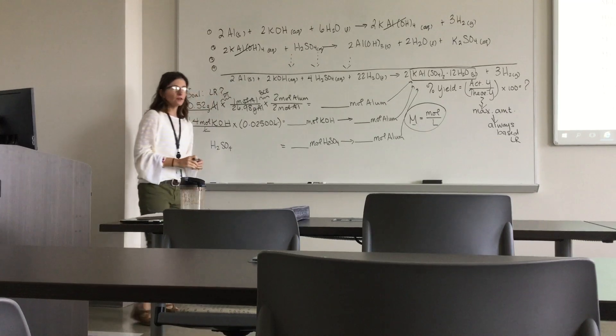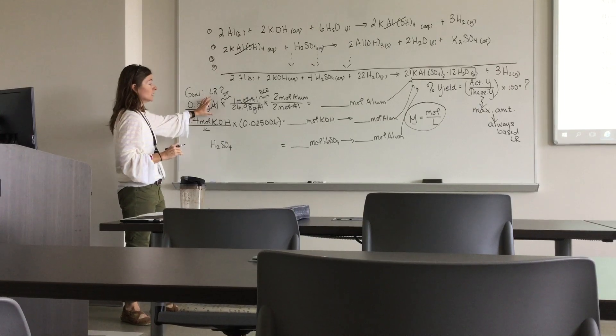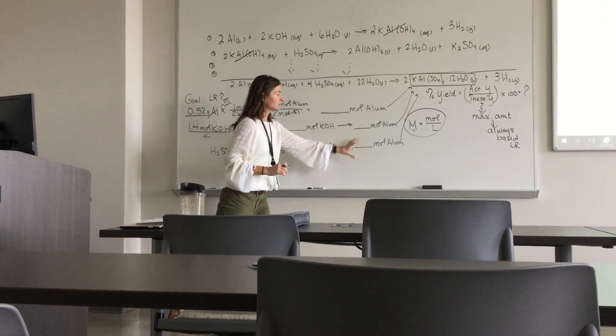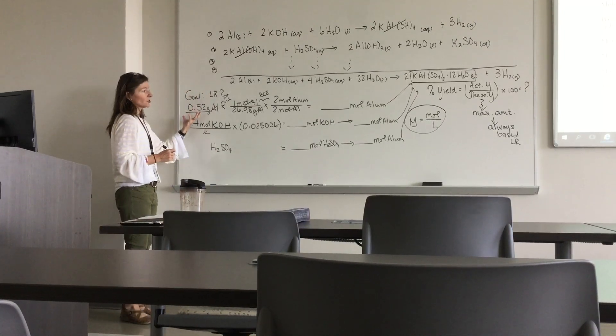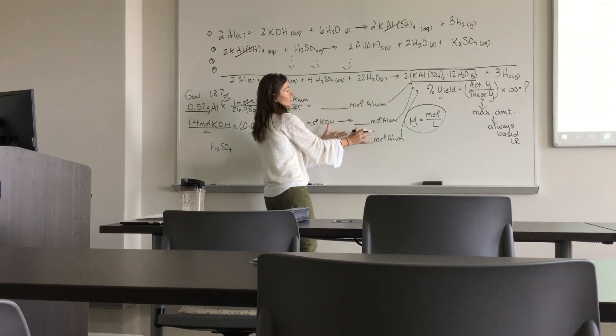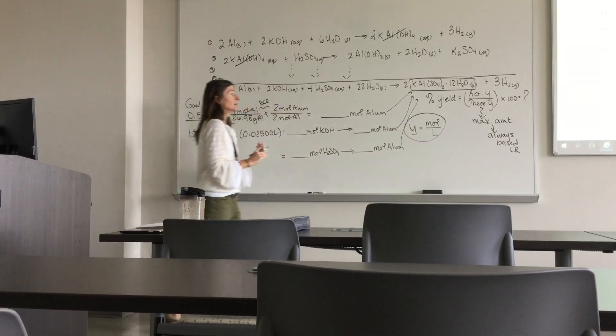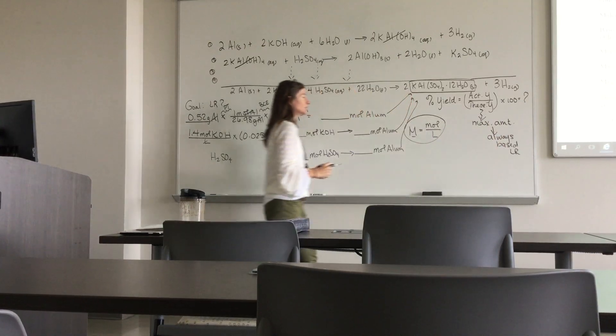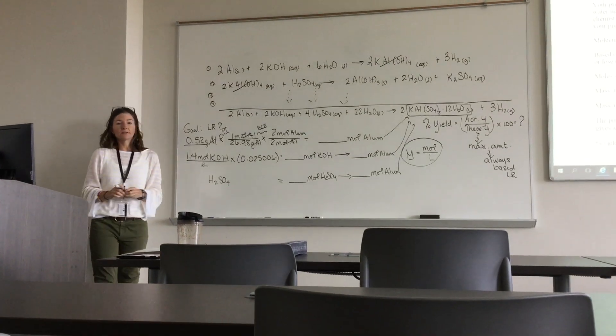Once you get to that point and you have your values, now you can figure out which one's the limiting reactant. Which one of the three—aluminum, potassium hydroxide, or sulfuric acid—produces the least amount of alum? Whichever one that is, that is your limiting reactant, and you will circle your limiting reactant. Also, whichever one produces the least amount, that one tells you what the moles of theoretical alum are produced. So whichever one produces the least amount is the limiting reactant, and it also tells you what the theoretical yield is. Then you can finish out your lab report from there. That should get you started on your calculations and understanding of limiting reactants.